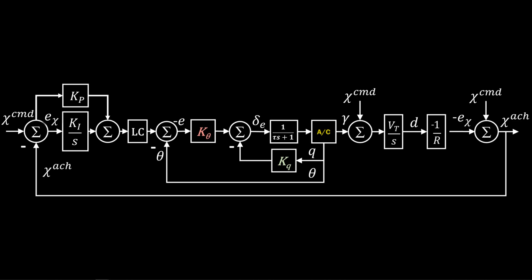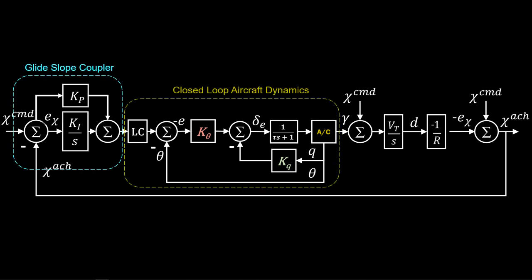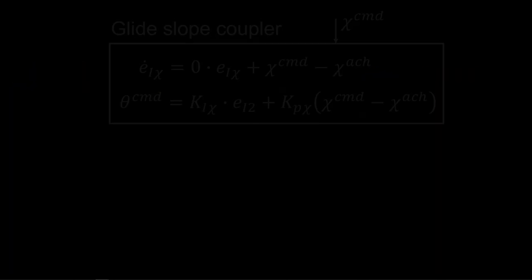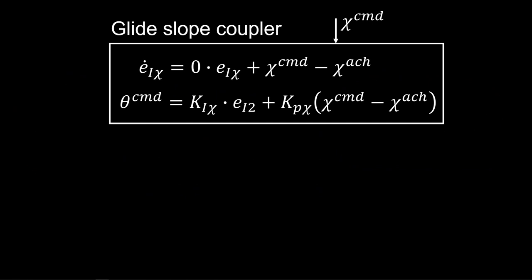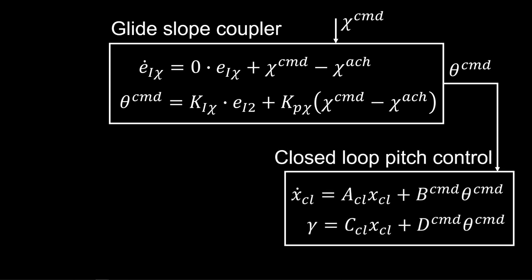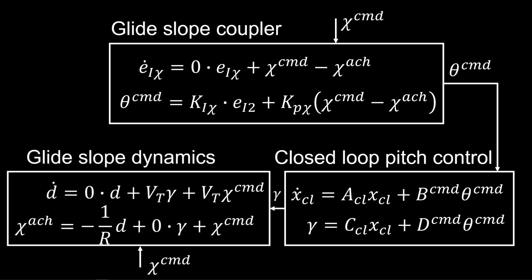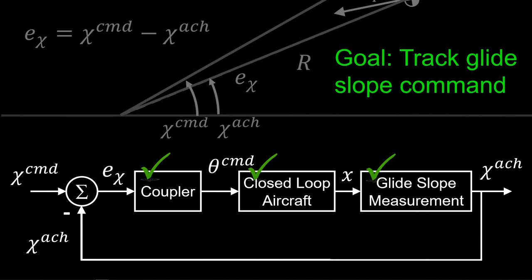This is the glide slope control loop, comprised of the coupler or controller, the closed-loop aircraft dynamics, and the glide slope measurement. In the time domain: the glide slope coupler receives the glide slope angle command input; the pitch angle command output goes to the closed-loop pitch control system, which affects the aircraft dynamics producing a change in flight path angle — input into the glide slope model to produce the achieved glide slope angle. This completes our development of the glide slope tracking control system architecture.